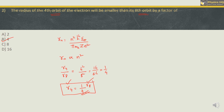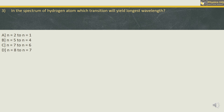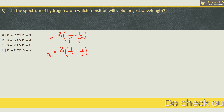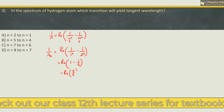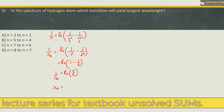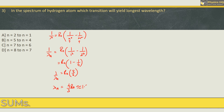Let us go ahead to the next MCQ. In the spectrum of the hydrogen atom, which transition will yield the longest wavelength? The options are: transition from 2 to 1, 5 to 4, 7 to 6, or 8 to 7. The formula for wavelength is: 1/λ = Rh × (1/n² − 1/m²), where m is the initial level and n is the final level. For option A (transition 2→1): 1/λA = Rh × (1/1² − 1/2²) = Rh × 3/4, so λA = 4/(3 Rh) ≈ 1.33/Rh.